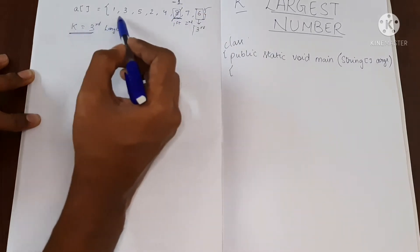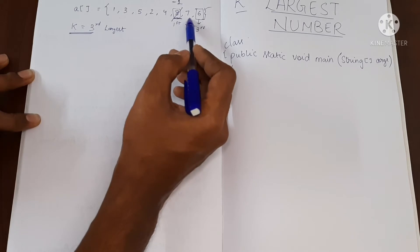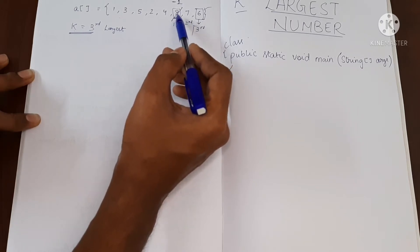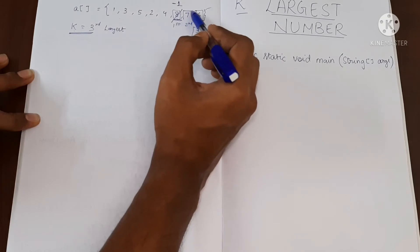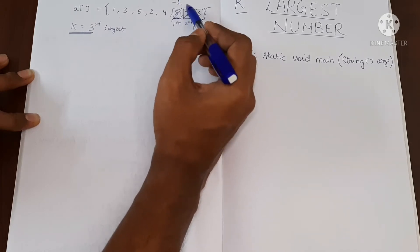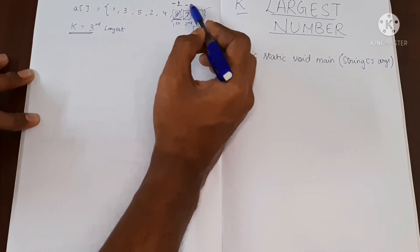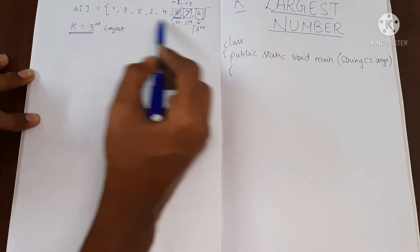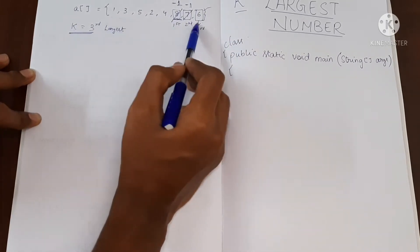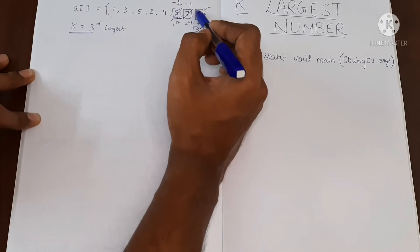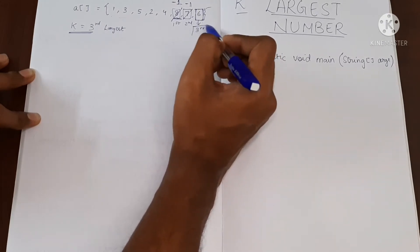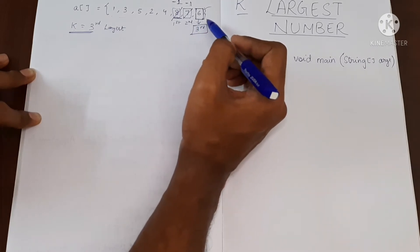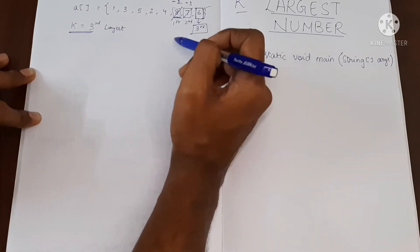Then again we'll come in this array and look for the largest value. In this case 8 is not the largest value because we have modified it. Now we'll find 7 as the largest number. Then again we change this into minus 1. And then again we'll check for the largest number in this array. In this case you will find 6, and this is the kth time we are searching this array and we will stop here. This will be our output.